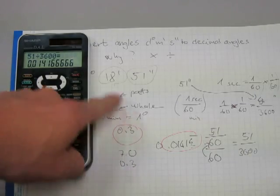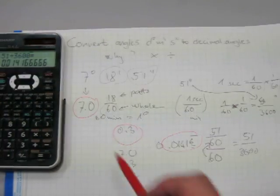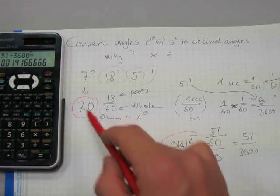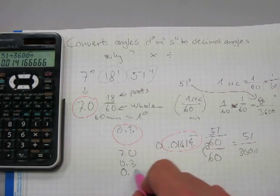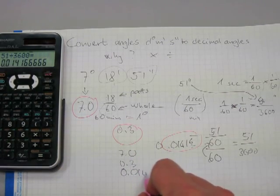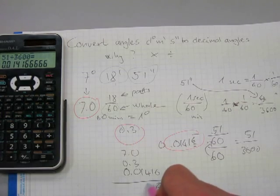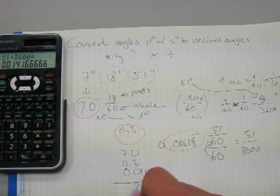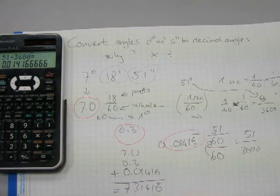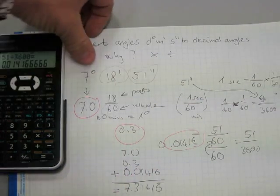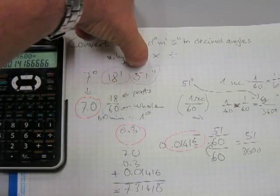So this amount represents the seconds in decimal degrees, this amount represents the minutes in decimal degrees, and this amount represents the degrees in decimal format. We just need to finish adding here: 0.01416 repeating. So 7 degrees 18 minutes and 51 seconds is 7.31416 in decimal degrees.